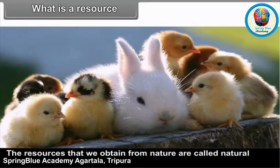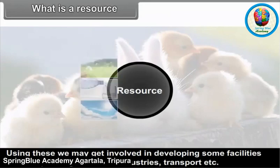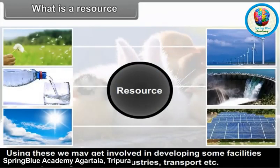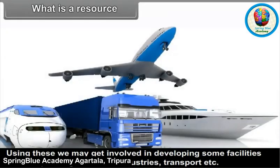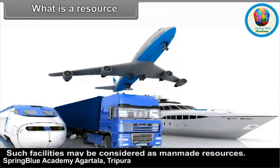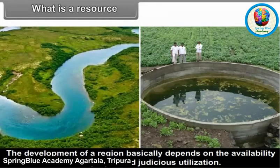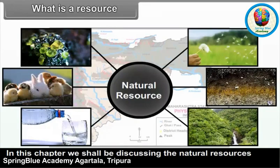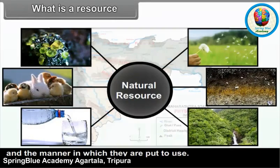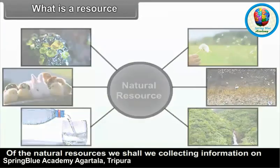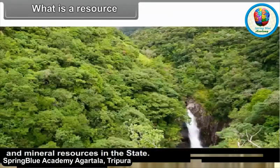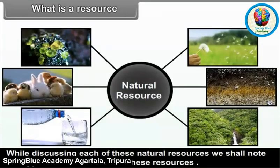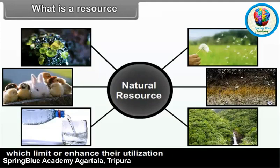The resources that we obtain from nature are called natural resources. Using these we may get involved in developing some facilities such as power generation, industries, transport, etc. Such facilities may be considered as man-made resources. The development of a region basically depends on the availability of resources and its proper and judicious utilization. In this chapter, we shall be discussing the natural resources available in Maharashtra and the manner in which they are put to use — land, water, soil, forest and mineral resources in the state.